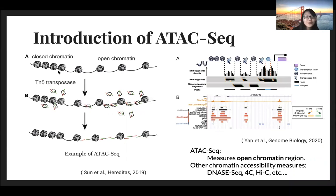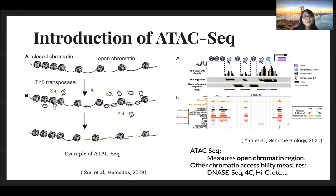Our DNA is wrapped by histone proteins, and there may be epigenetic modifications that make our DNA and histones pack either tighter or more open. If they're more open, we can use TN5 transposase to insert PCR primers or specific sequences into those open regions, and then do PCR amplification of those reads.